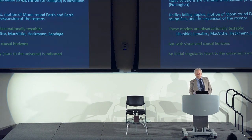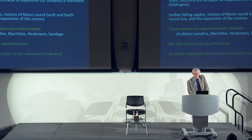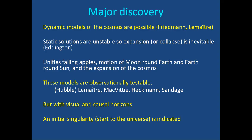Hubble was the first to lay the grounds for testing cosmology, but curiously he did not believe in the expanding universe to the end of his life. His value for the Hubble constant — the rate of expansion — was wrong by an order of magnitude, giving estimates of the universe's age less than the ages of stars, which is not possible. Observational testing was put on a solid footing by Lemaître, Sandage, and many others.